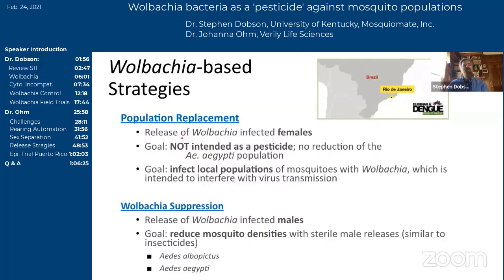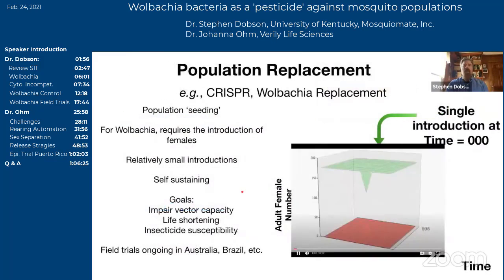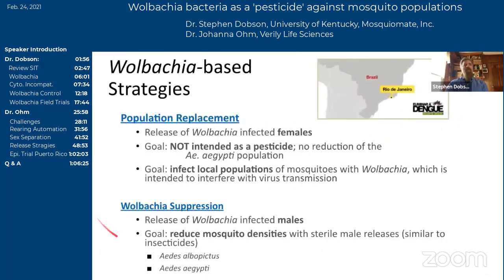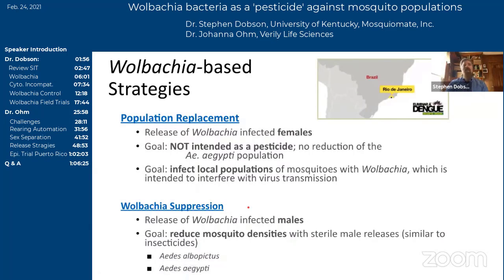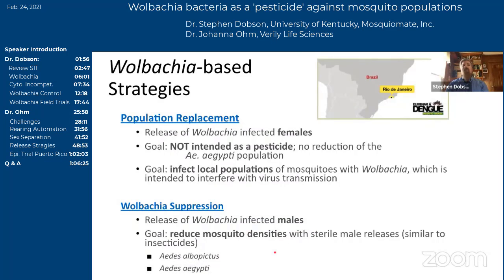Because Wolbachia is only inherited through females — it's maternally inherited — the population replacement approach necessarily requires that you release females. Wolbachia suppression, which is what we're focused on today, contrasts by being focused on the release of males only. Here, the goal is not to replace the population, but to reduce the population size — very much like an insecticide or pesticide. We'll be talking about examples today for both Aedes aegypti and Aedes albopictus.